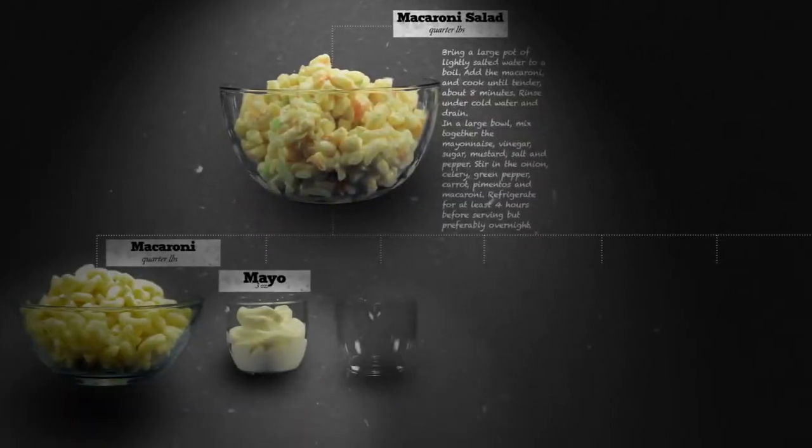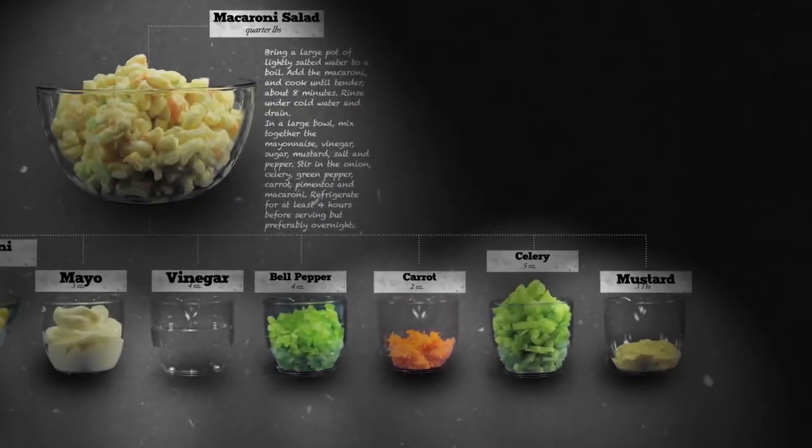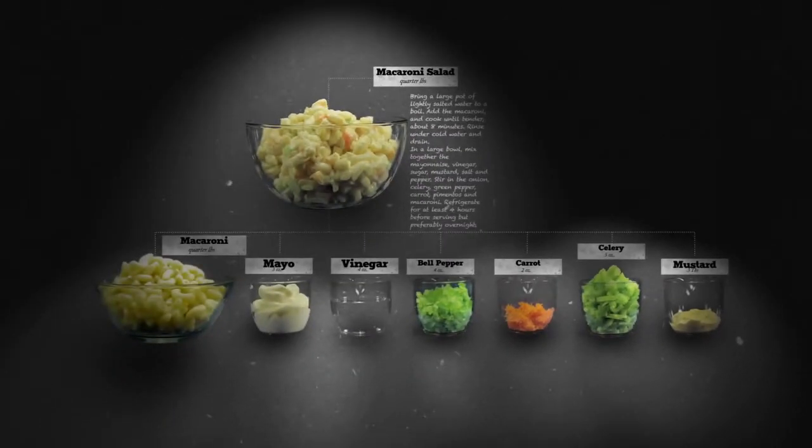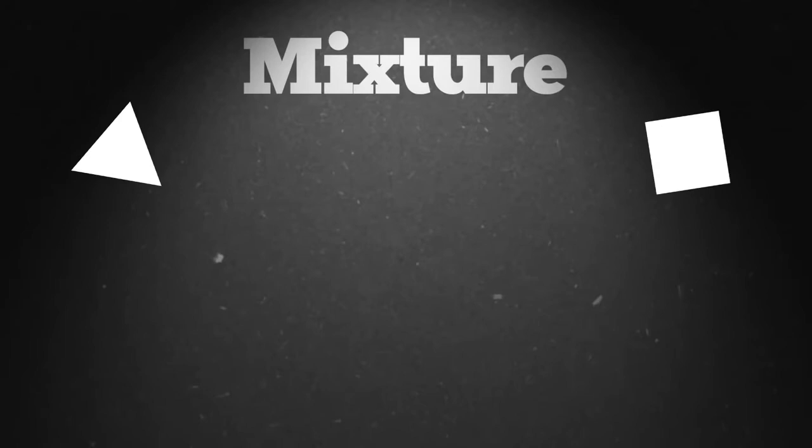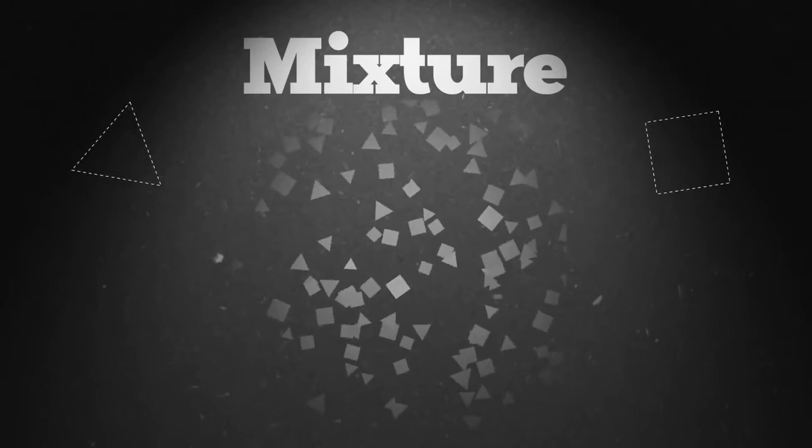like macaroni, mayo, vinegar, vegetables, and mustard. This type of combining is called a mixture. When you make a mixture, you're combining two or more things together without actually changing the chemical identity of those things.